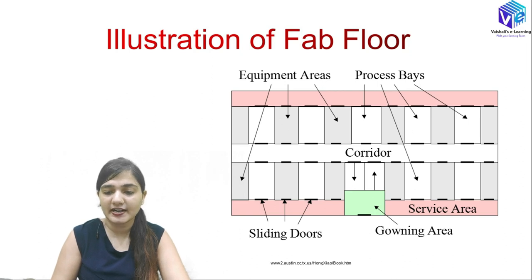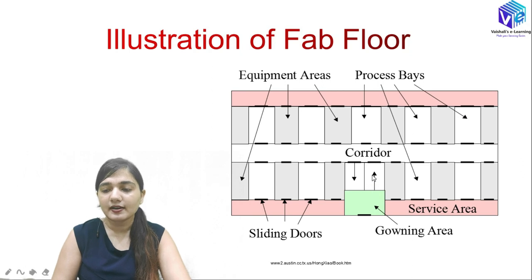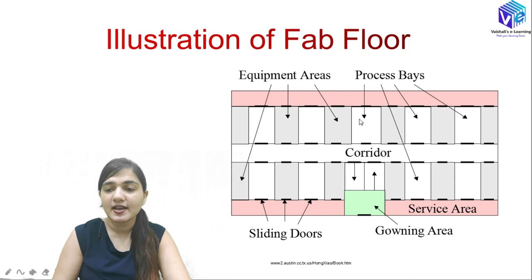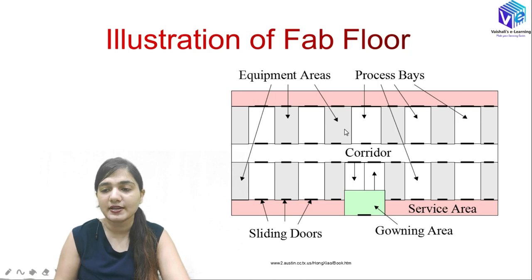This is the fabrication floor. These are the sliding doors — here you can see the sliding doors. This is the gowning area; from the gowning area you enter the service area. From the corridors you can go to the various equipment areas to perform processes, and there are process bays as well. You can reach the equipment areas through various sliding doors and use any process bay.